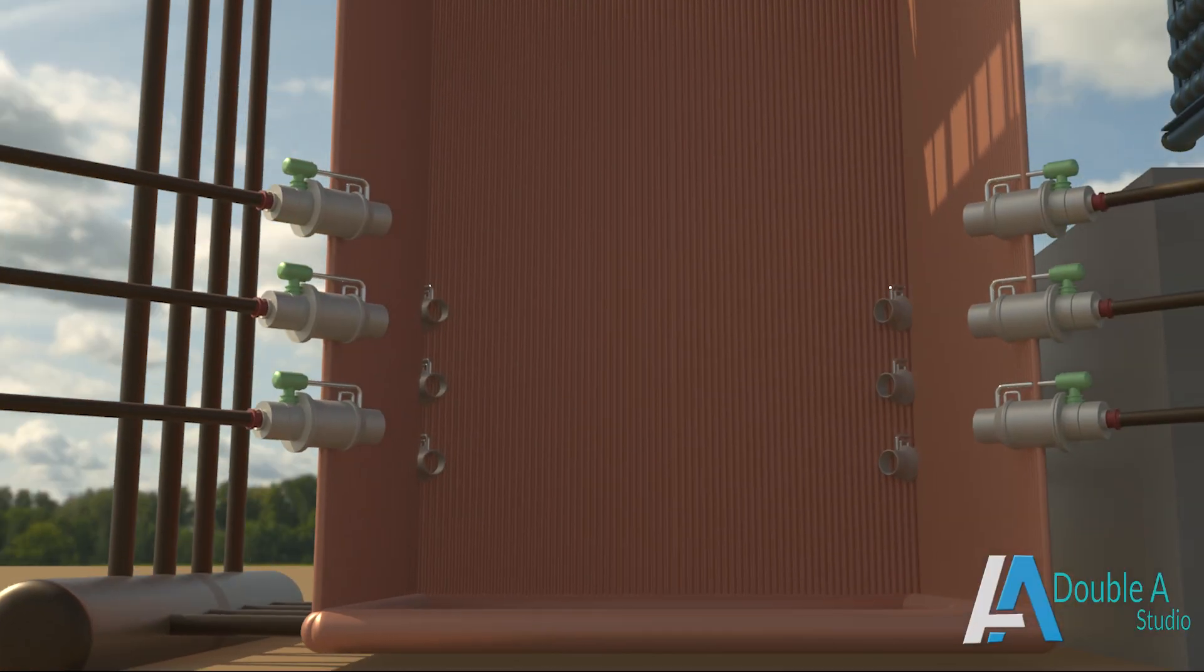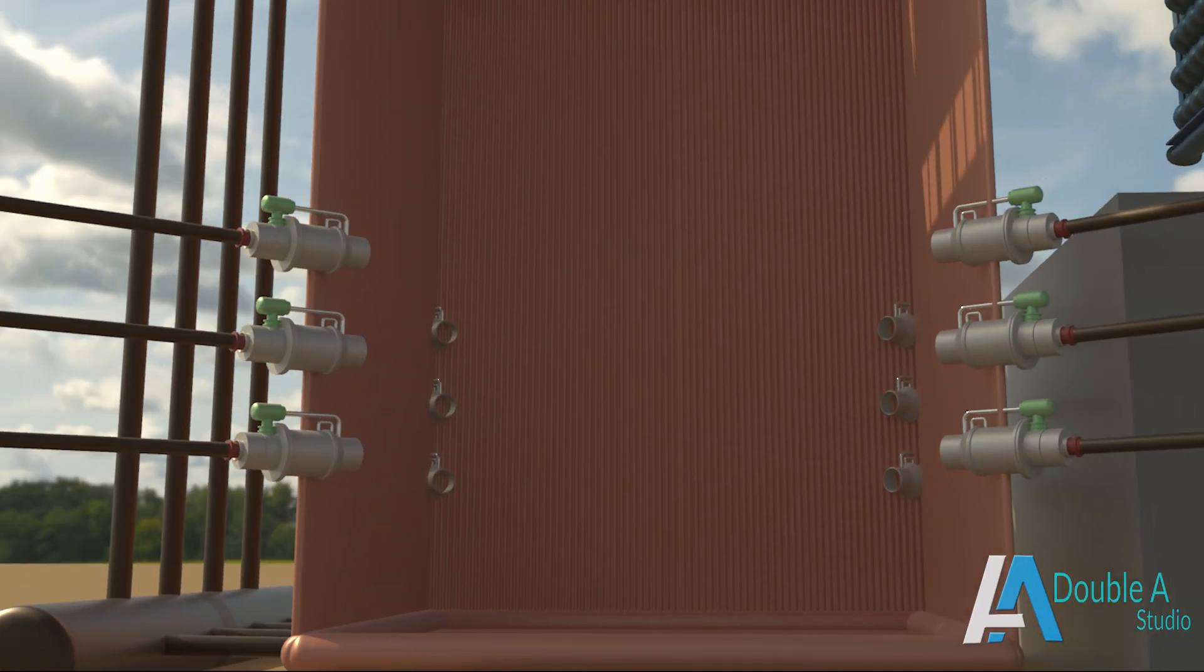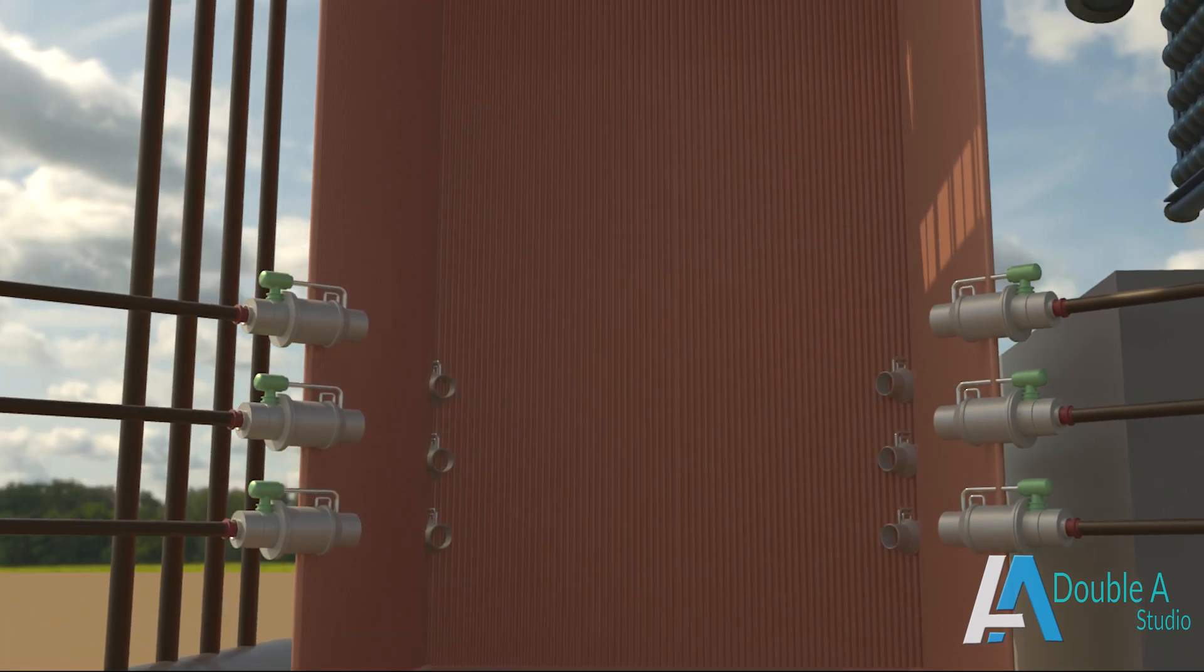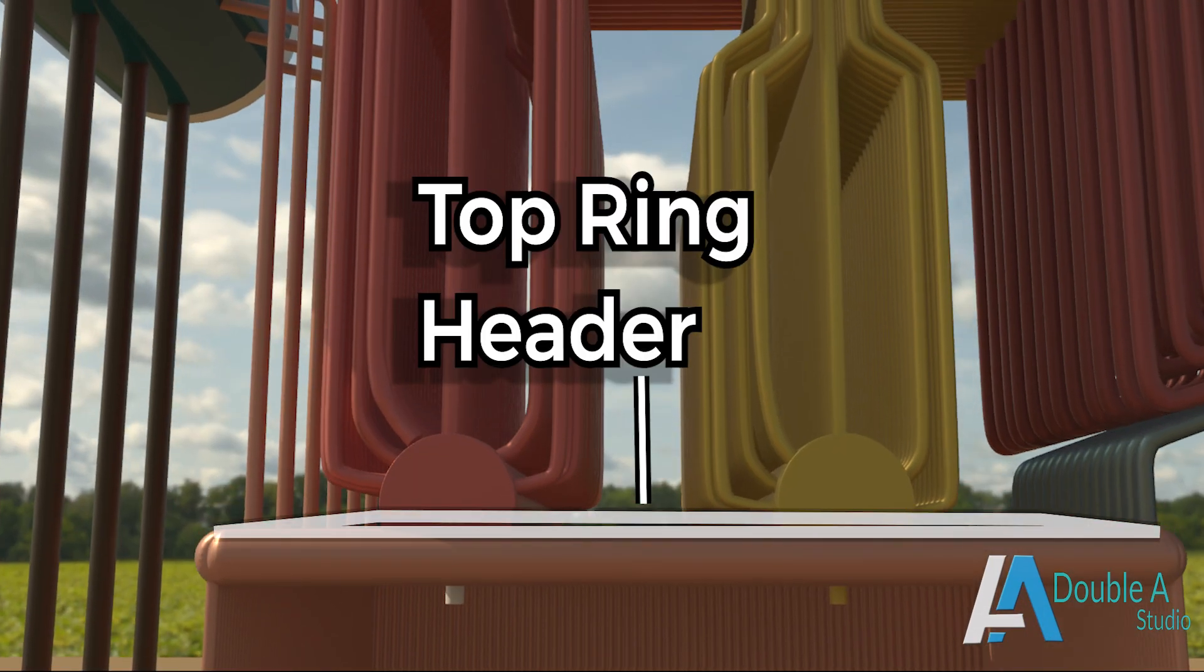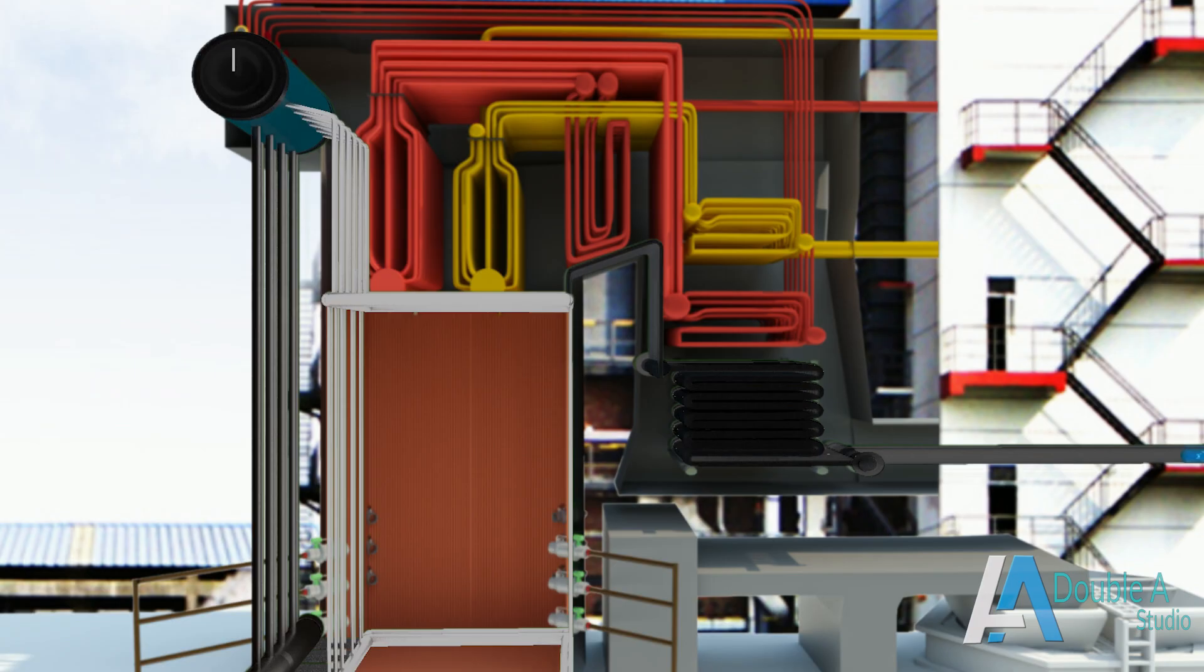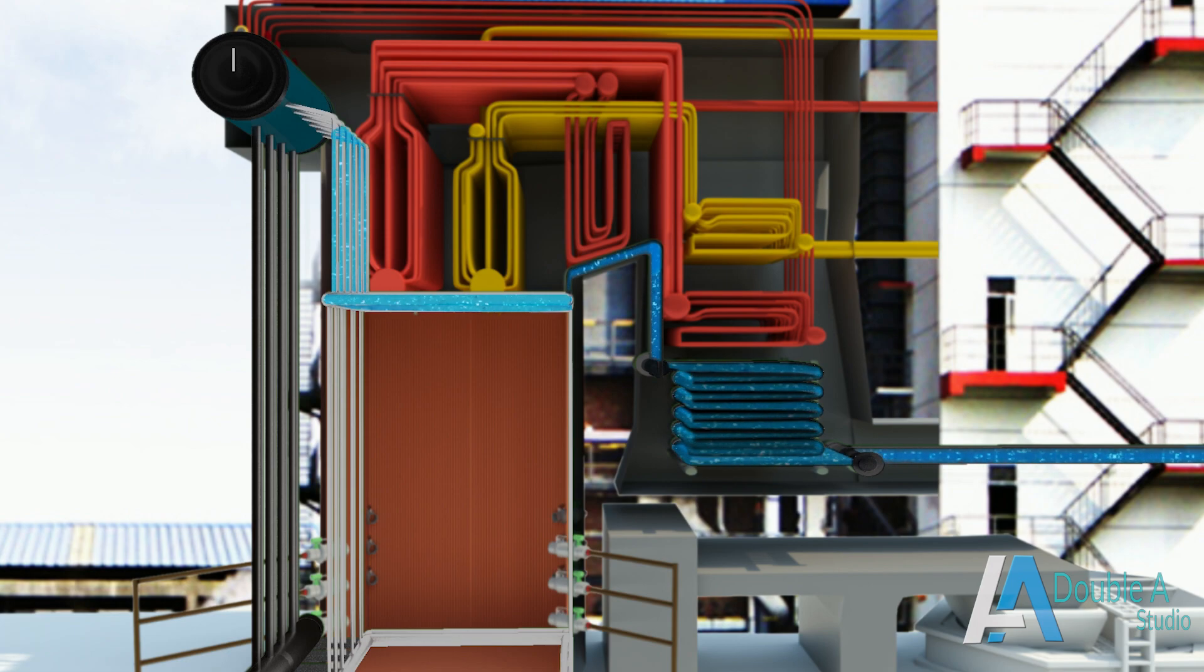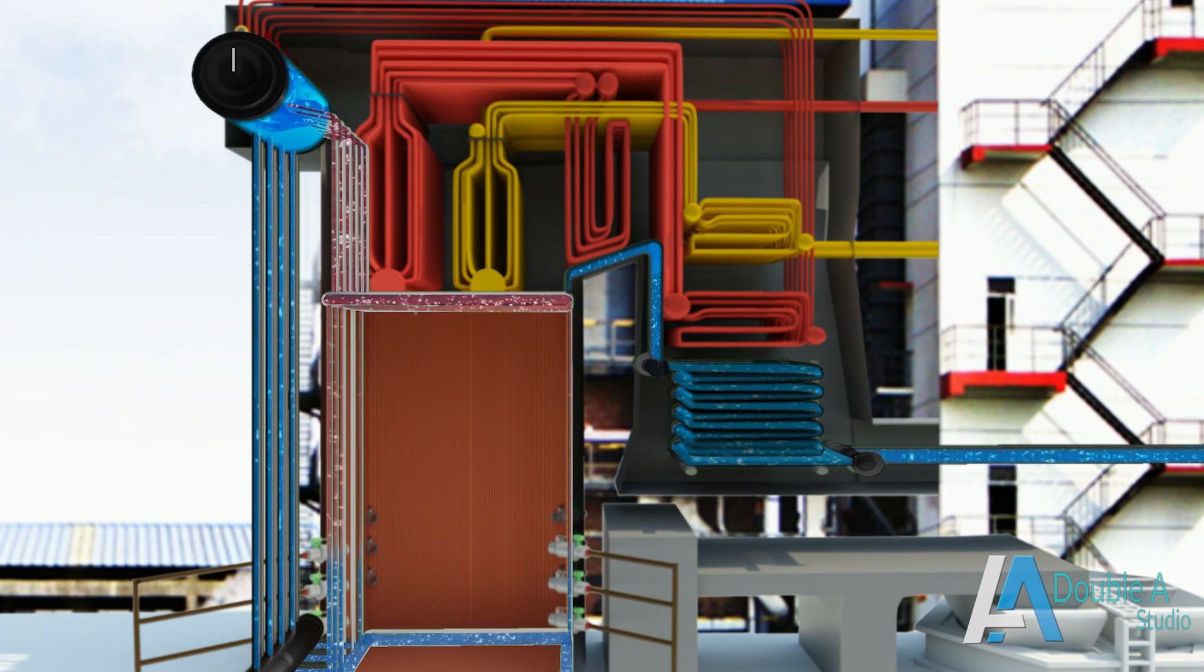There are two types of ring headers. One is the bottom ring header and the other is the top ring header. Bottom ring header receives water from downcomers through distribution headers and supplies water to the water walls. On the other hand, top ring header receives water from water walls and supplies to the boiler drum through risers.